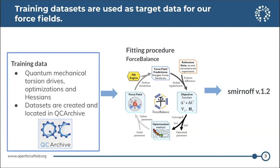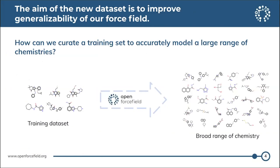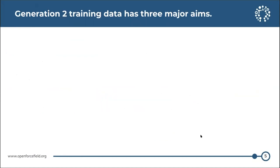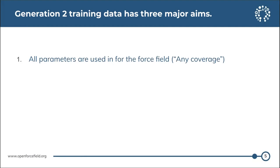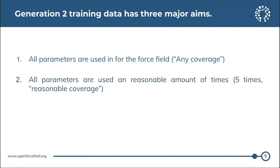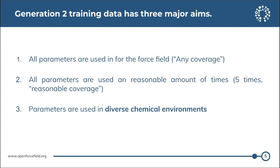Today I'm focusing on how we redesigned our training data. The aim of the new data set is to improve the generalizability of our force field — specifically how we can curate training data to model a larger range of chemistries. We had three major aims when creating the generation 2 training data set: first, that all parameters in the force field had coverage; second, that all parameters were used a reasonable number of times (we considered five times reasonable coverage); and third, that parameters were used in diverse chemical environments.